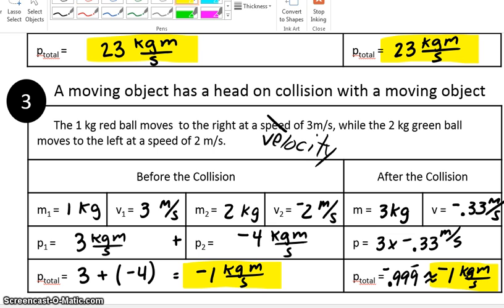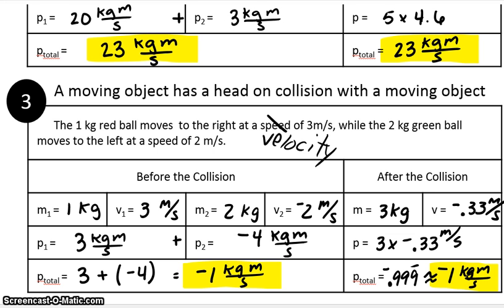So we have essentially discovered the law of conservation of momentum. The law of conservation of momentum states that the total momentum of a system never changes — the total momentum before a collision is equal to the total momentum after a collision. Individual objects within the system can transfer momentum from one to another, but the overall momentum doesn't change.